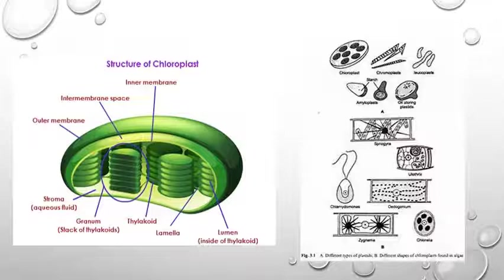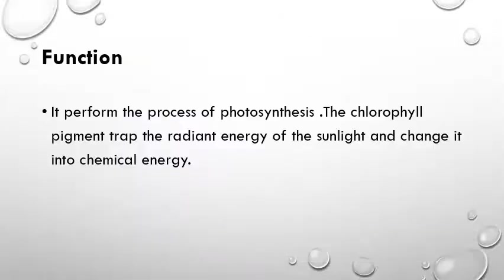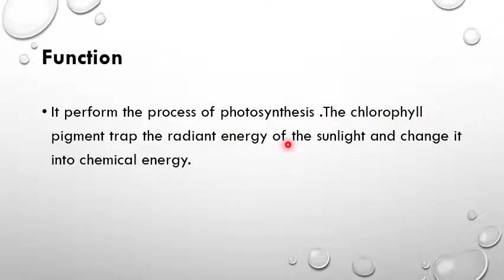Chloroplasts are green because they contain the pigment chlorophyll, which traps sunlight and converts solar energy into chemical energy in the form of food. The key function performed by chloroplasts is photosynthesis — the chlorophyll pigment traps radiant energy of sunlight and changes it into chemical energy. This is the only process by which food is made available in our universe.